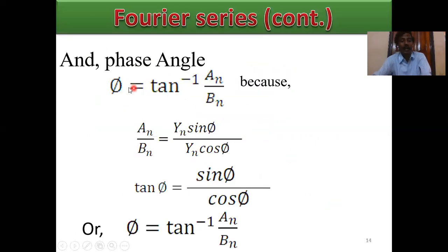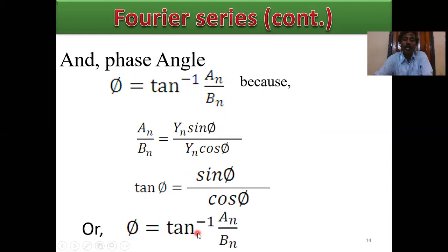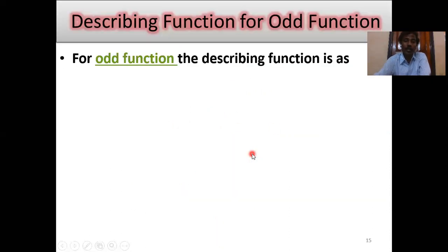Calculate phase angle φ: φ = tan⁻¹(aₙ/bₙ). Since aₙ = 0, φ = tan⁻¹(0/bₙ) = tan⁻¹(0) = 0°. Therefore the phase angle φ = 0°.